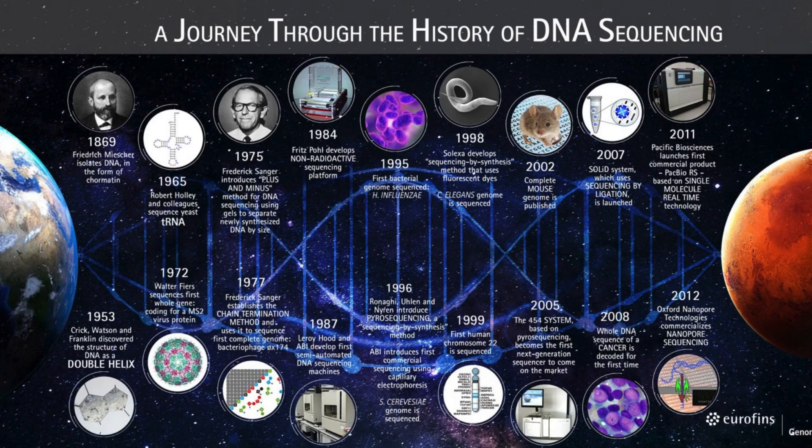Now let's embark on a fascinating journey through the history of DNA sequencing. It all began in 1869 when Friedrich Miescher first isolated DNA in the form of chromatin. Through the years, many scientists carried forward this journey, and finally around 2007, next generation sequencing was developed, which proved to be the changing point of the DNA sequencing journey.